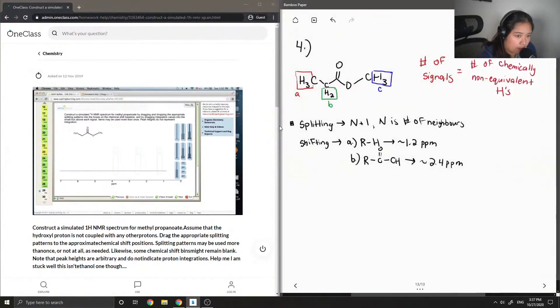And then lastly, for C, it's basically the hydrogens on the other end of an ether group. And they typically have a shift of 3.5 ppm. So these are values that you would just be given in a table.